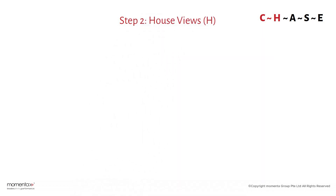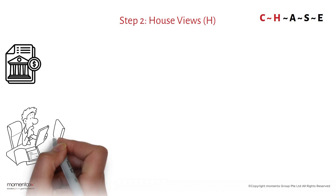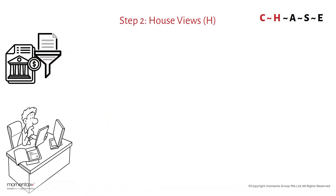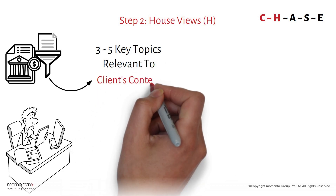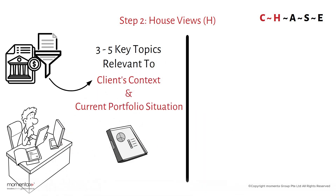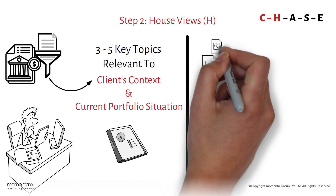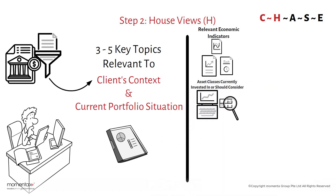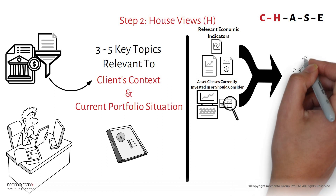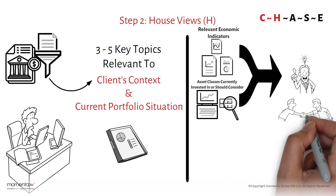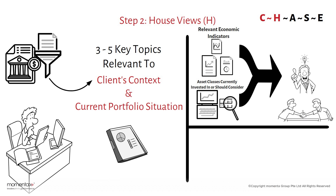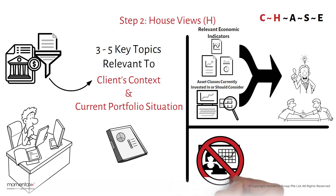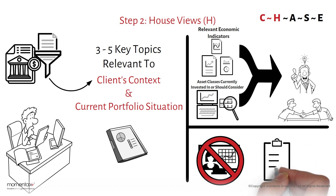Step two: House Views. Be well prepared with the house views. These documents can be quite extensive with a wealth of details. Identify three to five key topics relevant to the client's context and their current portfolio situation. This is the opportunity to integrate the most relevant economic indicators and the asset classes the client is currently invested in or should consider. The aim is to provide the client with insights from this collective wisdom, fostering trust in both our organization's expertise and the wealth manager's ability to identify relevance. Your presentation should not resemble a Bloomberg reporter, but should be a well-crafted summary of the three to five key points that the client should focus on, based on the current bank's house views.